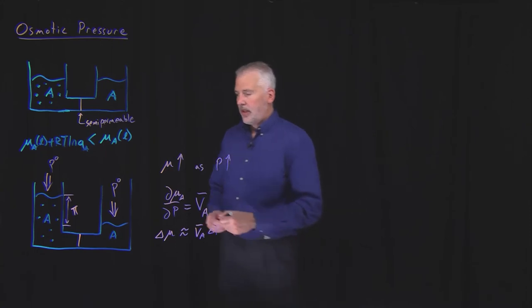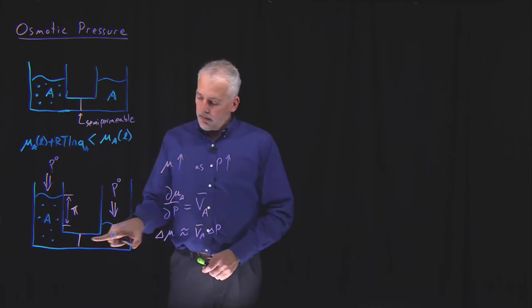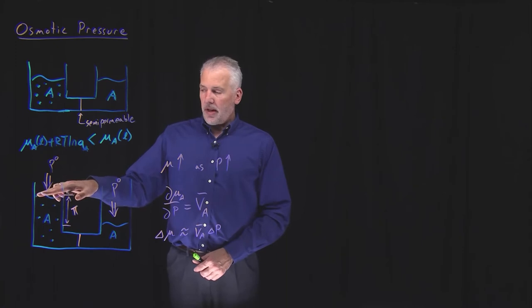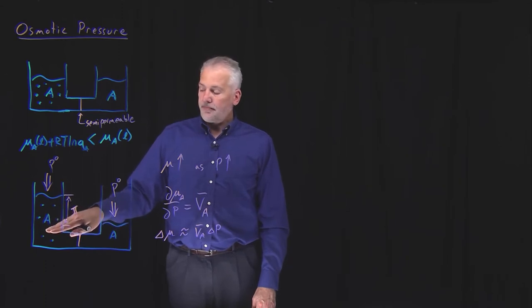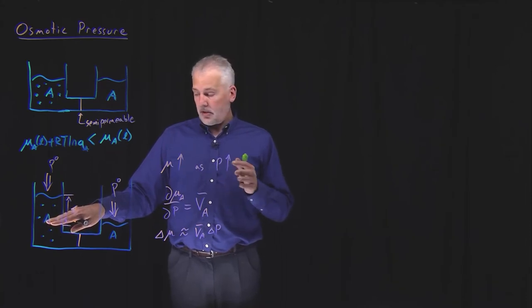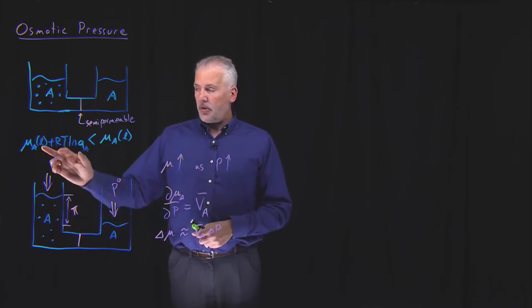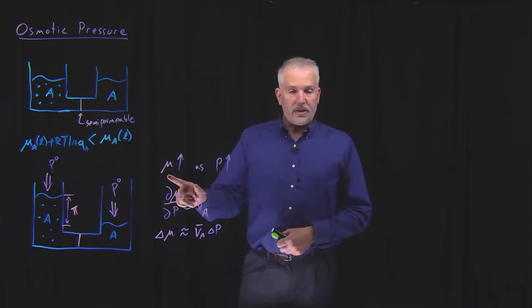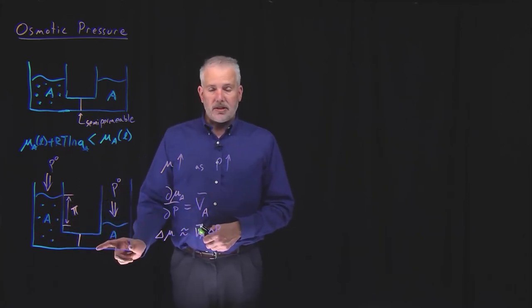So the change in chemical potential when pressure changes is the partial molar volume multiplied by the change in pressure, for an incompressible solvent. The equilibrium condition requires: as solvent flows into the solution side, first the solution becomes more dilute, which increases its chemical potential; and second, the pressure rises, which also increases its chemical potential. Eventually the chemical potential on both sides becomes equal and the system reaches equilibrium.